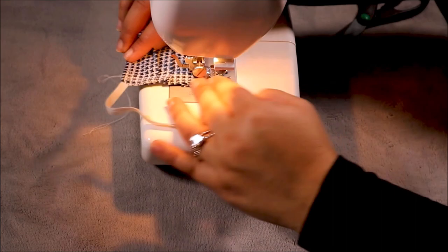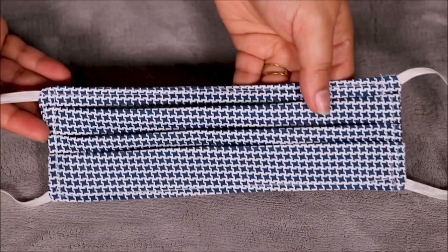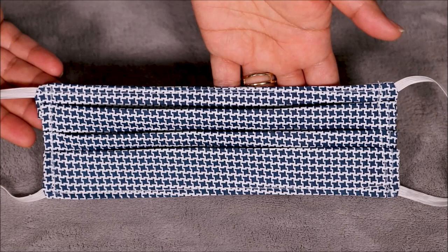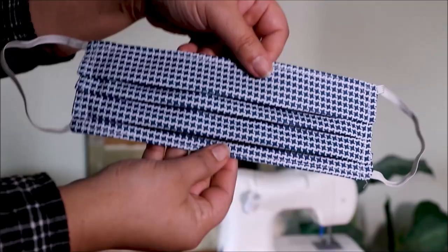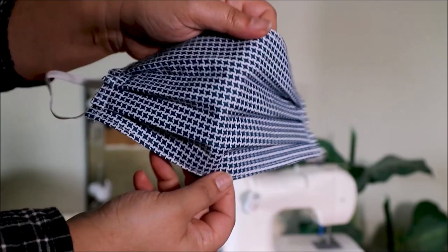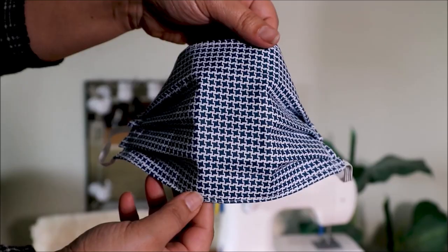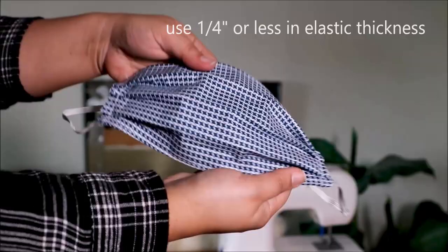And this is the finished mask. This is the standard size that the CDC recommends, and of course we have the folds which will help to cover all the way from the nose to the neck, and it's comfortable enough on the ends to put over your ears. The smaller the elastic in thickness, the more comfortable it is to go around your ears, so make sure it's either quarter inch or less than that. And that's how I make the masks.